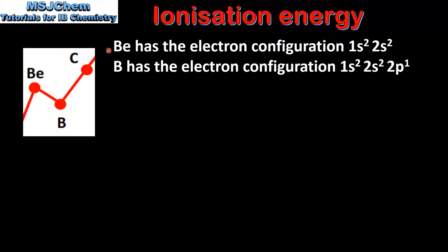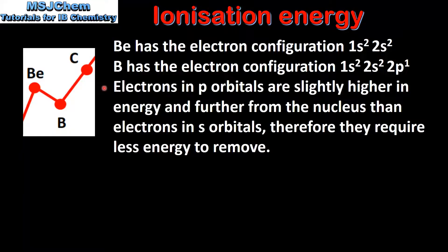Let's start by looking at the reason for the decrease in ionization energy between beryllium and boron. Beryllium has the electron configuration 1s2, 2s2. Boron has the electron configuration 1s2, 2s2, 2p1. Boron has one more electron than beryllium and that electron is located in a 2p orbital. Electrons in p orbitals are slightly higher in energy and further from the nucleus than electrons in s orbitals, therefore they require less energy to remove. This explains the decrease in ionization energy between beryllium and boron.